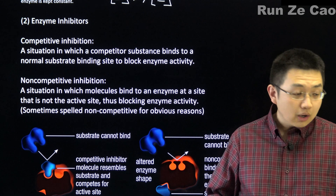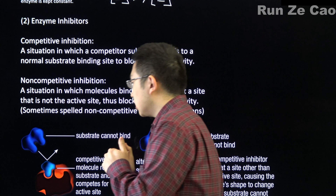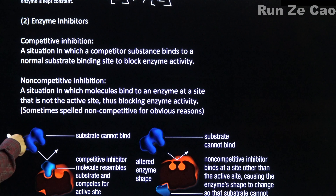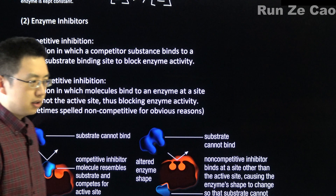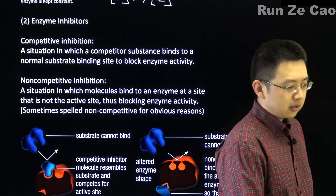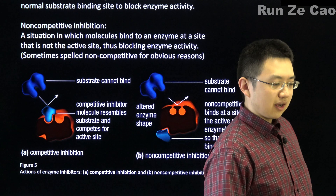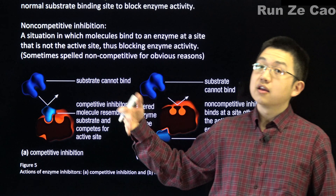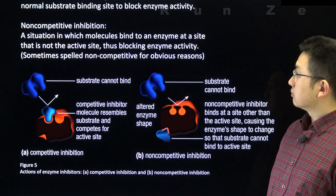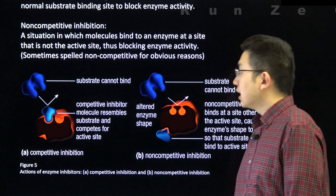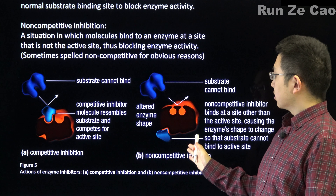To turn enzymes off or on, we have regulators such as enzyme inhibitors. Competitive inhibition is where instead of letting the substrate bind, we shove something that looks like the substrate into the active site and block enzyme activity by competing for the active site — that's why it's called competitive inhibition.